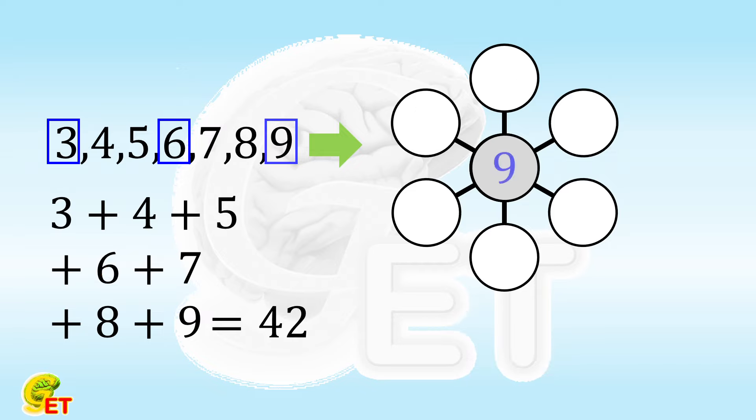If the number in the middle is 9, 42 minus 9 equals 33. 33 divided into 3 parts gives each part as 11. So the opposite of 4 is 7, the opposite of 5 is 6, and the opposite of 3 is 8.